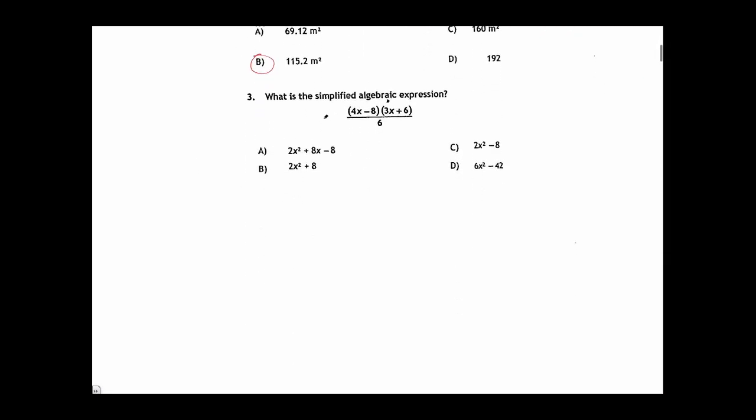Question 3: What is the simplified algebraic expression? Here we have a fraction where the numerator is a binomial multiplied to another binomial, and the denominator is just the number 6. So what I'd like to do is begin by distributing my multiplication. This is called foiling. The first term gets multiplied to both terms in the second bracket, and the second term in the first bracket gets multiplied to both terms in the second bracket.